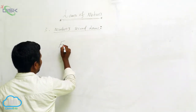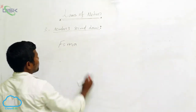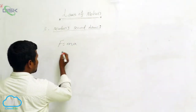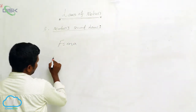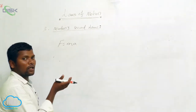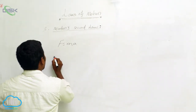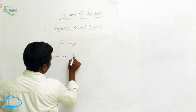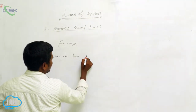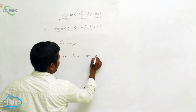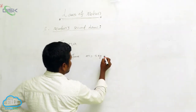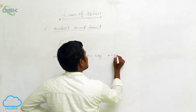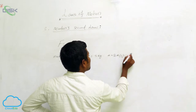Newton's Second Law gives us the formula F = ma. Based on this, we can solve many problems. Let us take an example: find the force, where m = 5 kg and a = 2 meters per second squared.